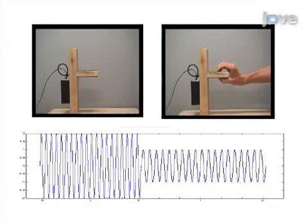The results show the activation of the mirror neuron system during the observation and execution of motor actions, based on the attenuation of the EEG mu rhythm.